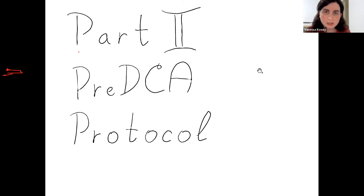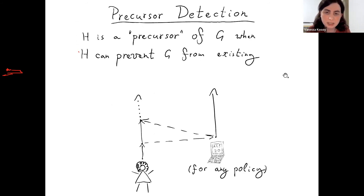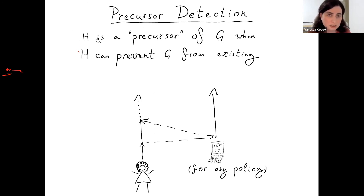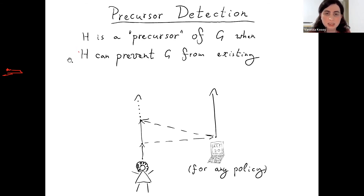With all those building blocks, we can define what the actual protocol is. The protocol relies on the notion of a precursor: if G is an agent, then H — which can also be a coalition of agents — is called a precursor of G when H can prevent G from existing. That is, H has some policy such that if H follows that policy, G will not run.